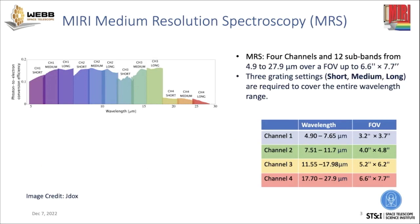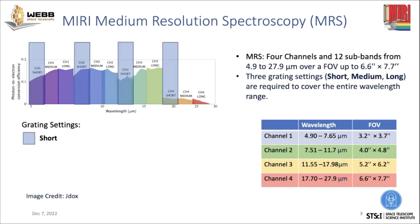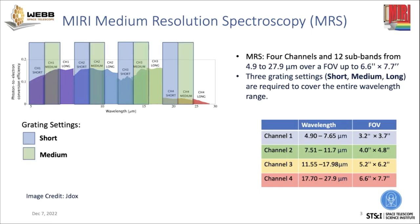The MRS has four channels, and these four channels from the four IFUs are divided into a total of 12 subbands to cover the full wavelength range. In order to observe the full wavelength range, you have to observe in three grating settings. For one observation in the short grating setting, you'll get just the first third in each channel, so there'll be breaks in your spectrum. To cover the full wavelength range from about 5 to 28 microns, you also have to observe in the medium grating and the long grating to get a continuous spectrum.